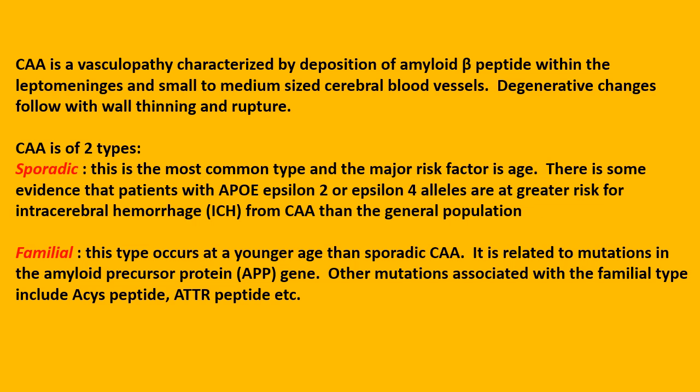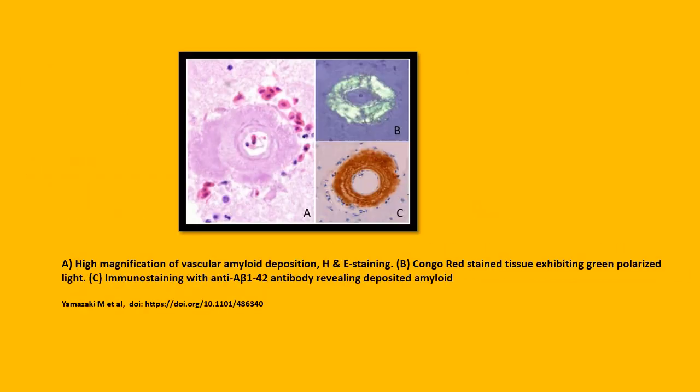Familial: this type occurs at a younger age than sporadic CAA. It is related to mutations in the amyloid precursor protein, or APP, gene. Other mutations associated with the familial type include ACis peptide as well as ATTR peptide. This picture shows amyloid deposition in the vessel wall: A is H&E staining at high magnification, B shows Congo red stain exhibiting green polarized light, and C shows an immunostain which reveals deposited amyloid.